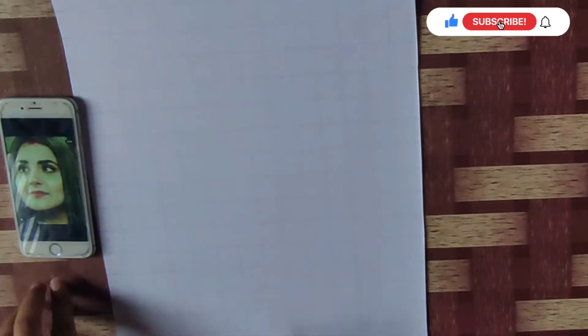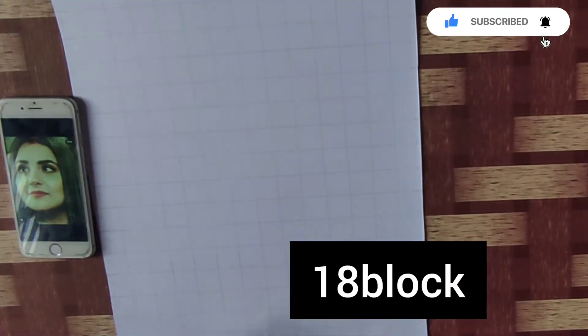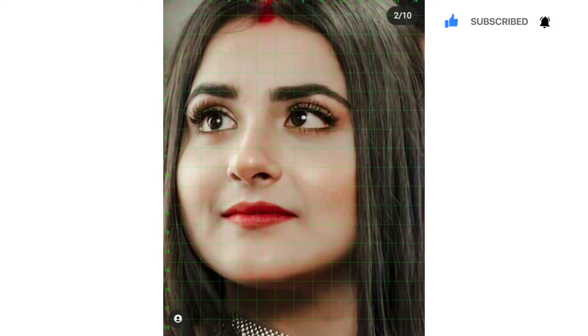First of all, you have to draw a block. Here is 14 and here is 18 blocks. After this, you change the photo in the grid.